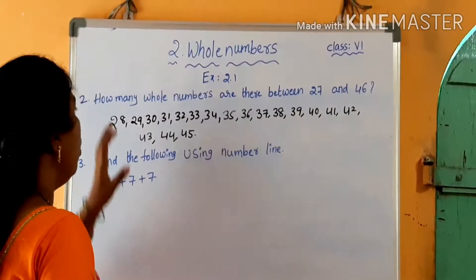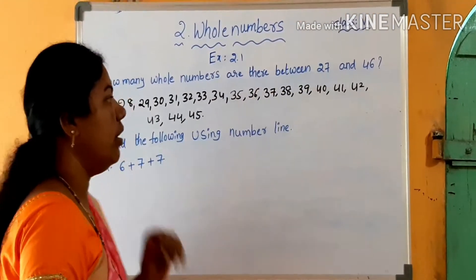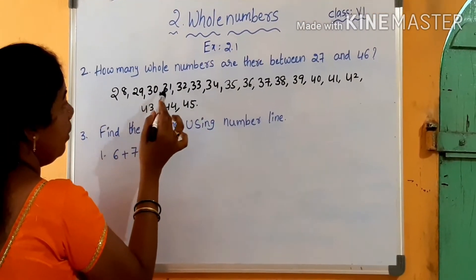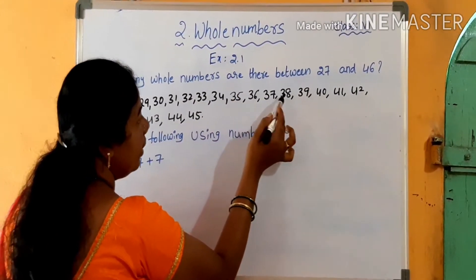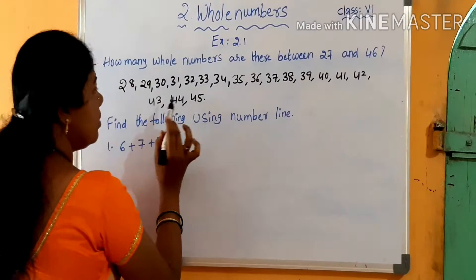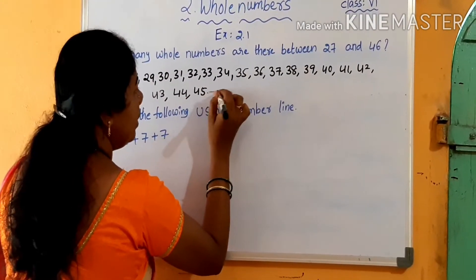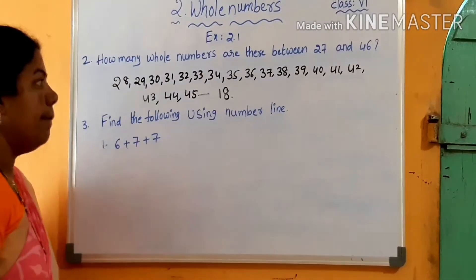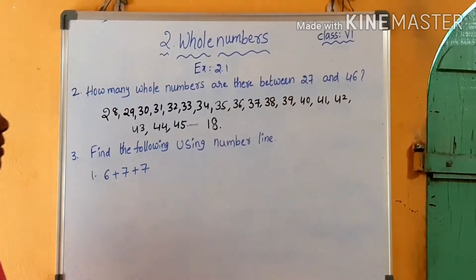How many whole numbers are there between 27 and 46? We count: 1, 2, 3, 4, 5, 6, 7, 8, 9, 10, 11, 12, 13, 14, 15, 16, 17, 18. So 18 numbers are there between 27 and 46.